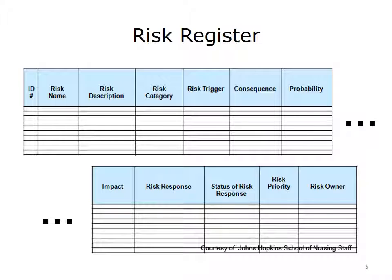You will document and track your identified risks in a risk register. Some of the categories in a typical risk register might include description, category, trigger, consequence, and probability. A key category is the risk owner — this is the person assigned to monitor that particular risk and implement the risk response strategy.